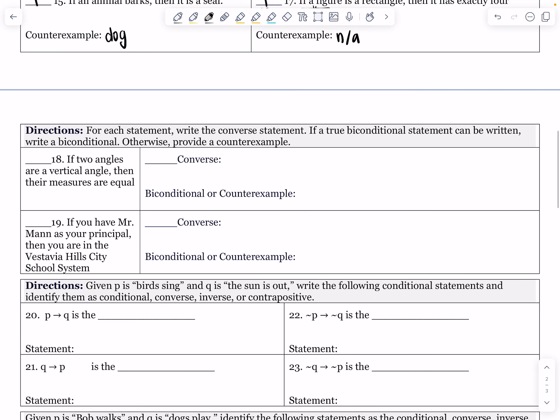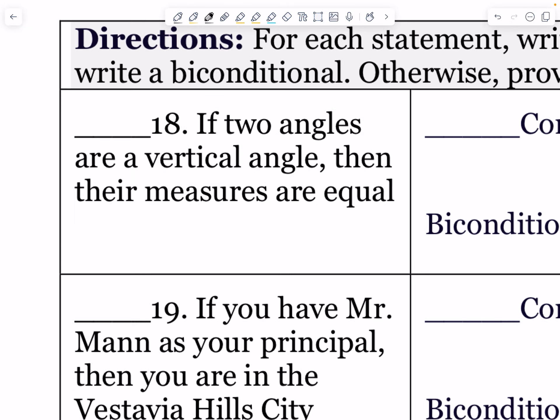For each statement, write the converse statement. If a true biconditional statement can be written, write it. Otherwise, provide a counterexample. So they give us a conditional statement. Let's see if it's true or false.